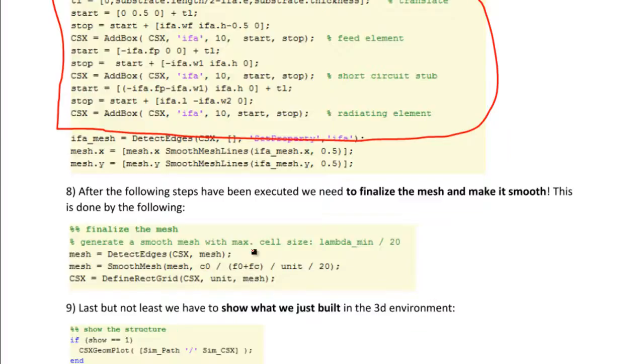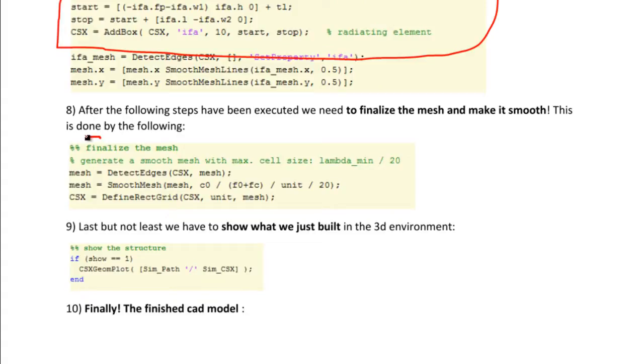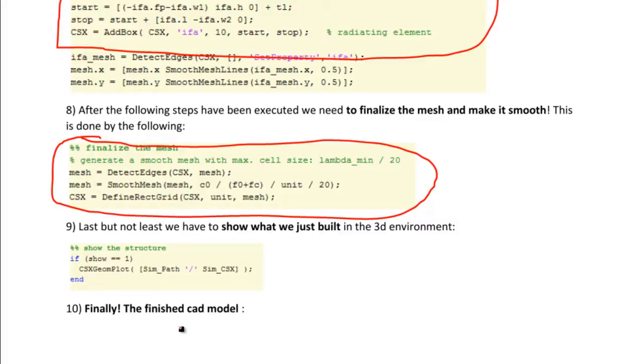Now, going back to the code, I want to show you how we made the mesh look smooth. We used this piece of code here to detect edges in the mesh, to make the edge smoother, and this piece of code actually explains how we did that.